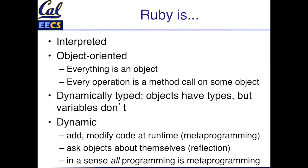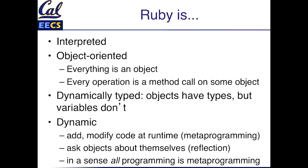It is dynamically typed. What does that mean? It means that there are types in the language, but variables don't have types. Objects have types, but the same variable can spend part of its life being an int, part of its life being something totally different. It is a dynamic language, and in the next couple of segments we're going to see some specific examples of what that means.